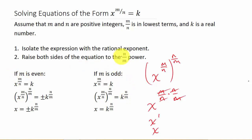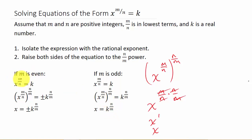Basically, you're raising both sides to the reciprocal of the exponent. If m is even, then x equals plus or minus k raised to the n over m. If m is odd, then x is just equal to k raised to the n over m. So if the numerator is even, you have to include the plus or minus; if it's odd, you don't.